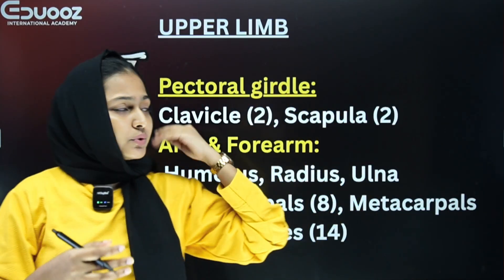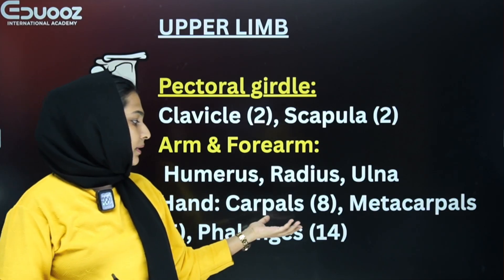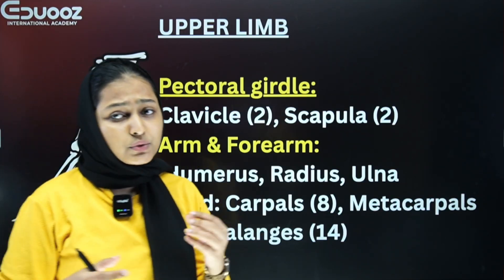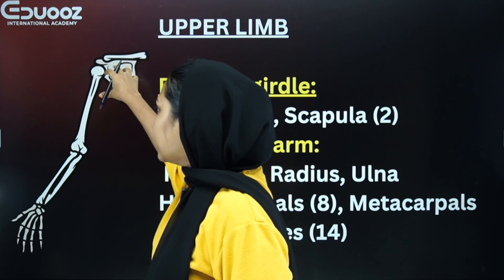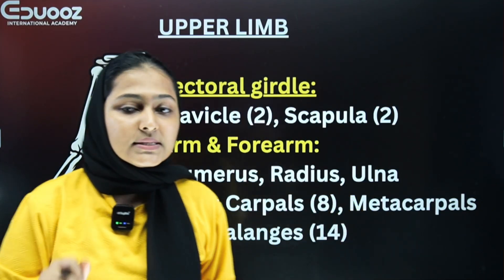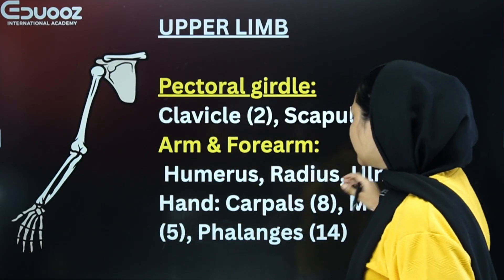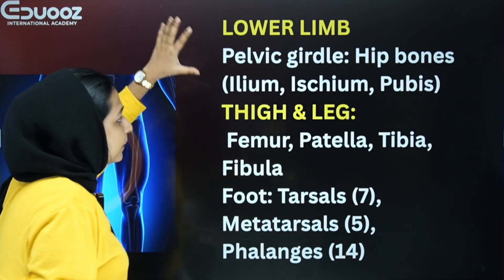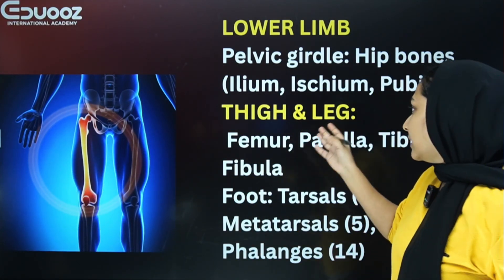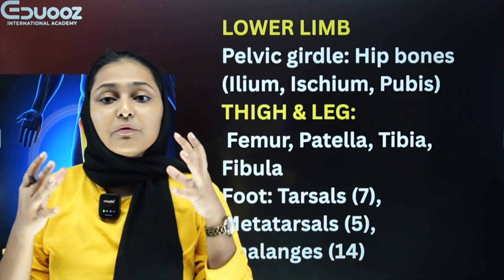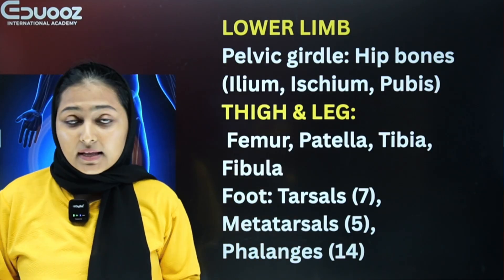To summarize the upper limb: pectoral girdle (clavicle and scapula), arm (humerus), forearm (radius and ulna), hand bones (carpals, metacarpals, phalanges). For the lower limb: pelvic girdle (hip bones — ilium, ischium, pubis), femur (largest bone of the body), tibia, fibula, tarsals, metatarsals, and phalanges.